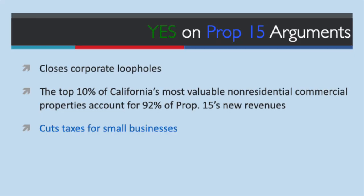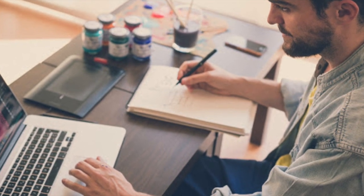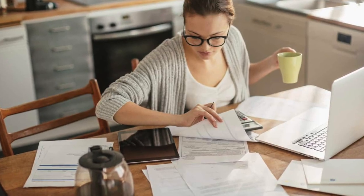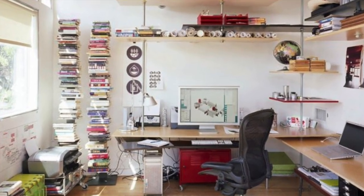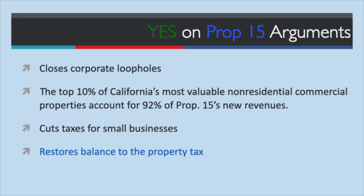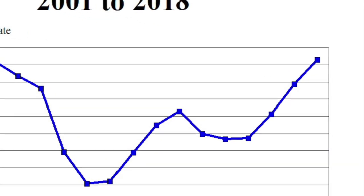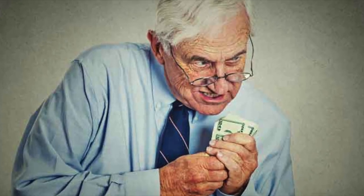Prop 15 cuts taxes for small businesses, protecting those operated out of a home and businesses owning $3 million or less of non-residential commercial property, and cutting business personal property taxes on equipment, computers, and fixtures. It also restores balance to the property tax: since Prop 13 passed, the residential share of property taxes has skyrocketed from 55% to 72% and the non-residential commercial share has fallen.